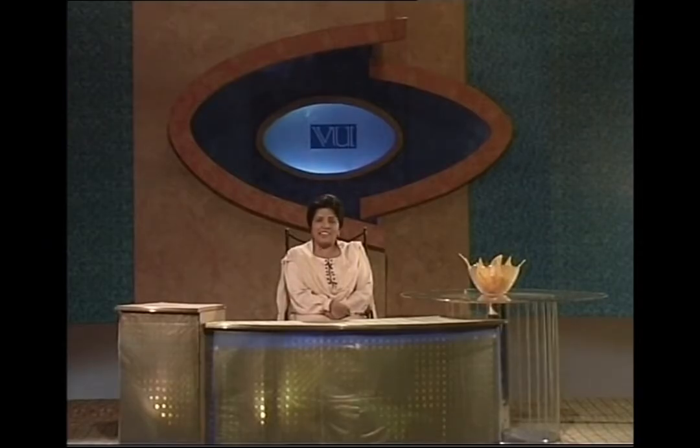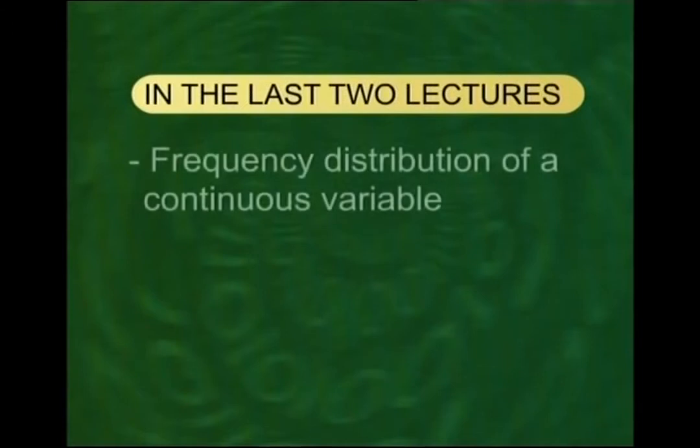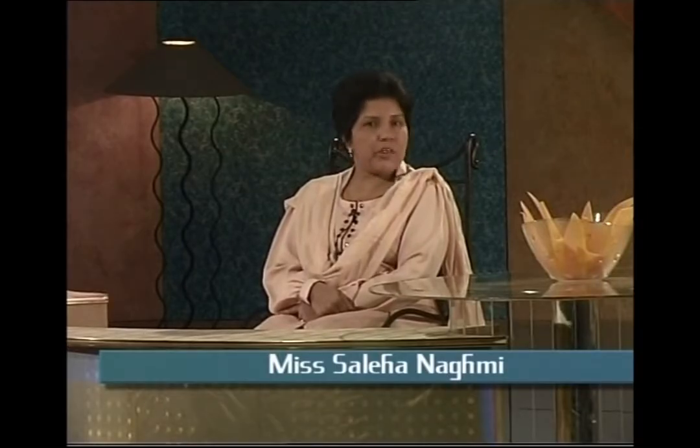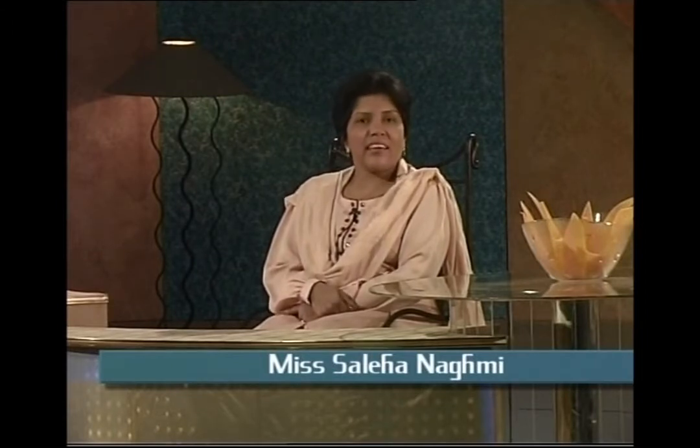Assalamu alaikum, welcome to lecture number six of the course on statistics and probability. In the last two lectures, we dealt with the frequency distribution of a continuous variable. In today's lecture, I will begin with the stem and leaf plot, introduced by the famous statistician John Tukey in 1977. The motivation was that when you form a frequency distribution, the identity of the individual observations is lost.